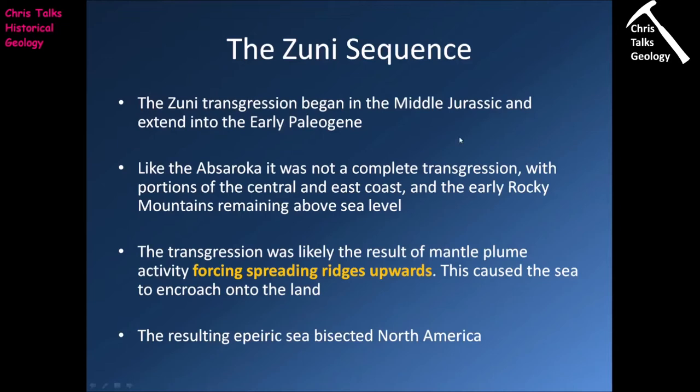The Zuni transgression begins in the middle Jurassic and extends all the way through into the early Paleogene, so it goes into the Cenozoic. Like the Absaroka, it was not a complete transgression — the Sauk, the Tippecanoe, and the Kaskaskia pretty much resulted in all of the United States being underwater, but the Absaroka and the Zuni left large portions above sea level. This meant large quantities of clastic sediments could be produced through erosion, so there was plenty of clastic sediment moving around.